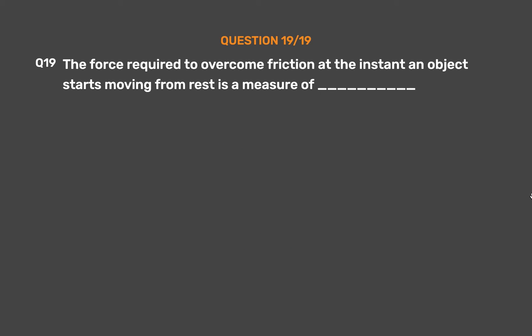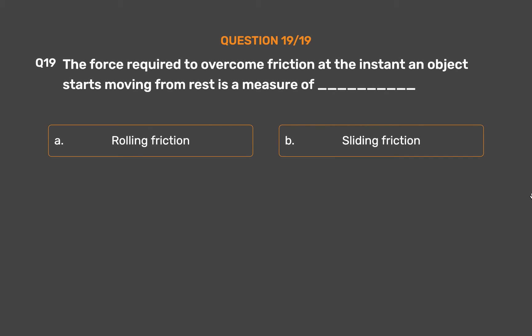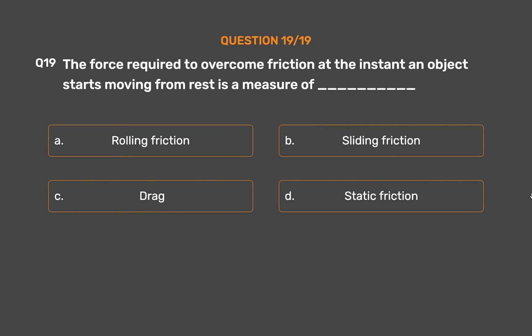Question number 19. The force required to overcome friction at the instant an object starts moving from rest is a measure of blank. Option A: Rolling friction. Option B: Sliding friction. Option C: Drag. Option D: Static friction.